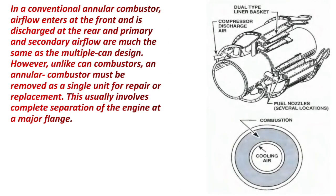Here you can see a picture of an annular combustion chamber. The main disadvantage of the annular combustion chamber is difficult maintenance. The whole combustion chamber must be removed from the engine for repair and replacement, unlike the can type combustion chamber in which a single can can be removed individually.